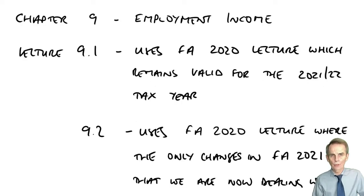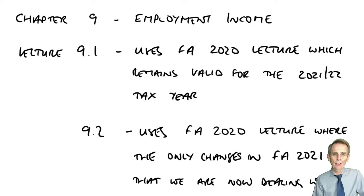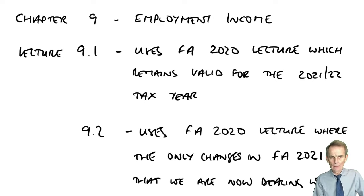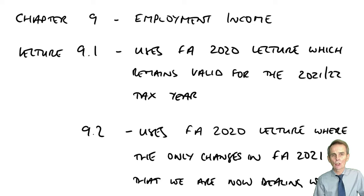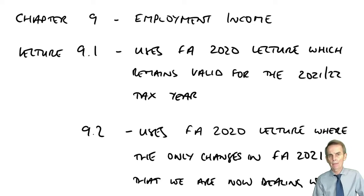From chapters 4 through to chapter 8, what we've been looking at is the unincorporated trader — the self-employed individual. The self-employed taxpayer could either be a sole trader or could be a partner within a partnership.